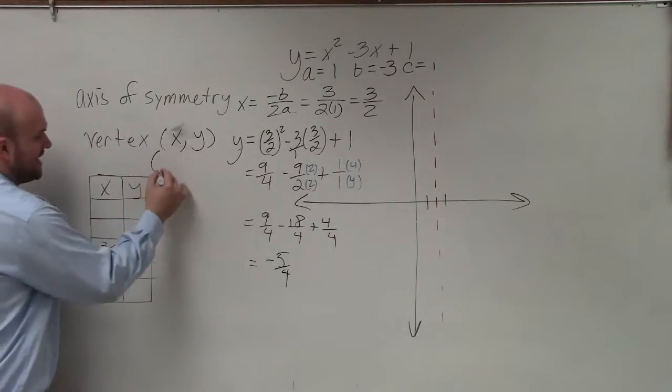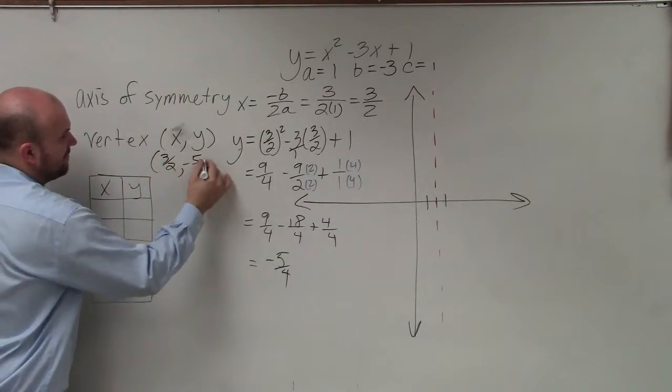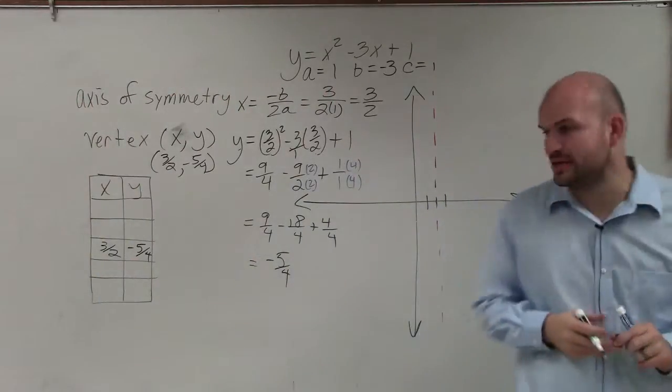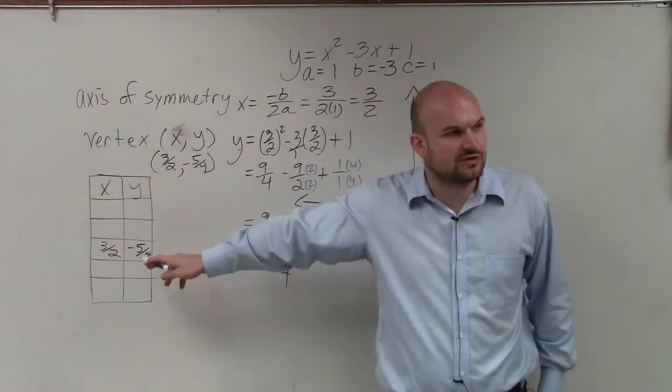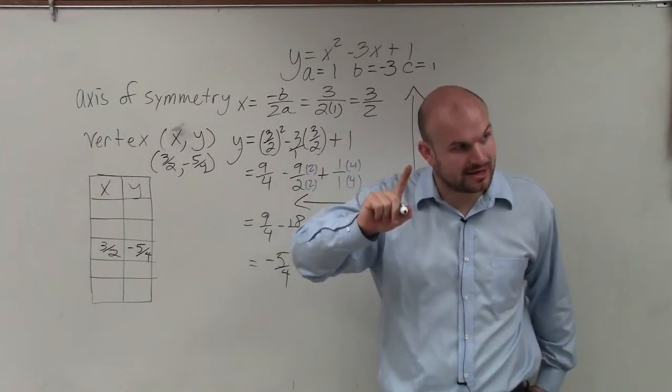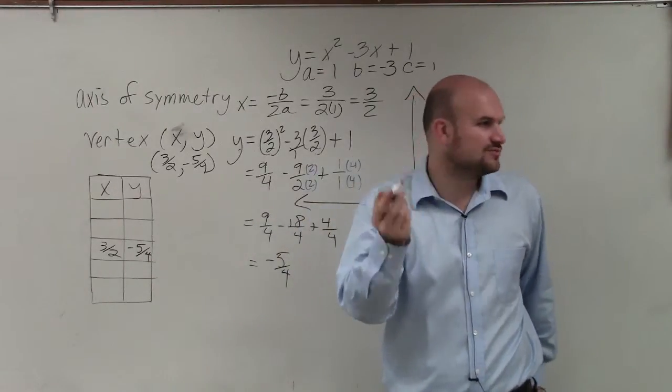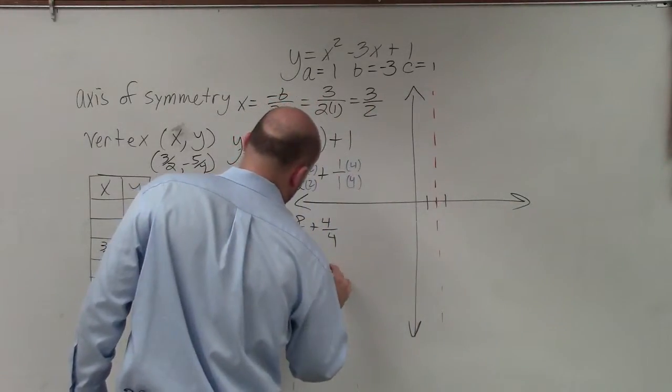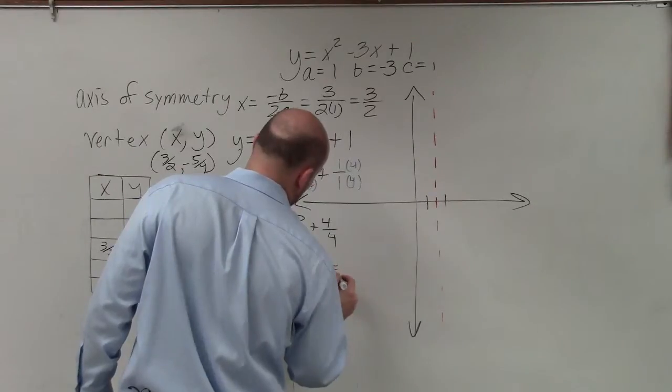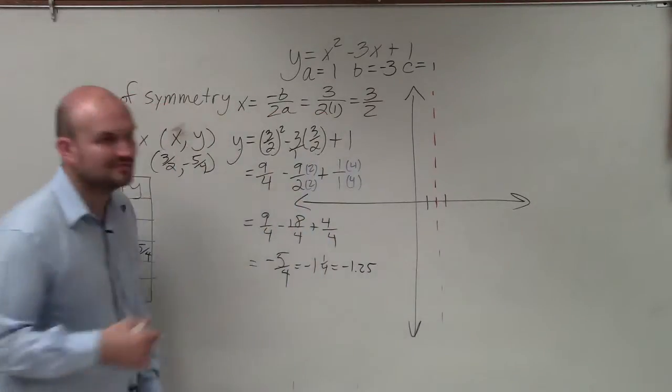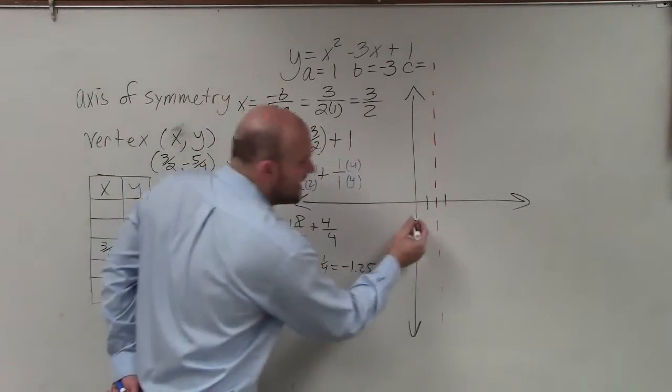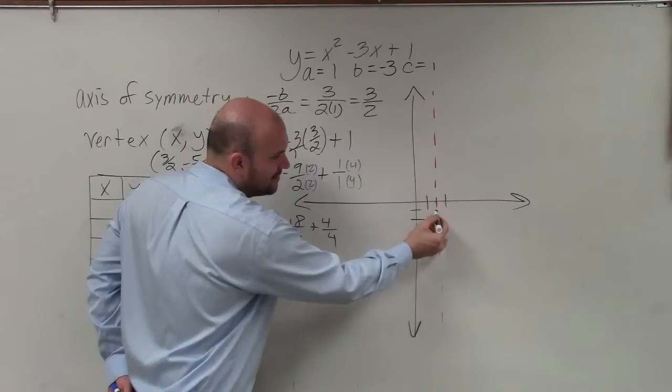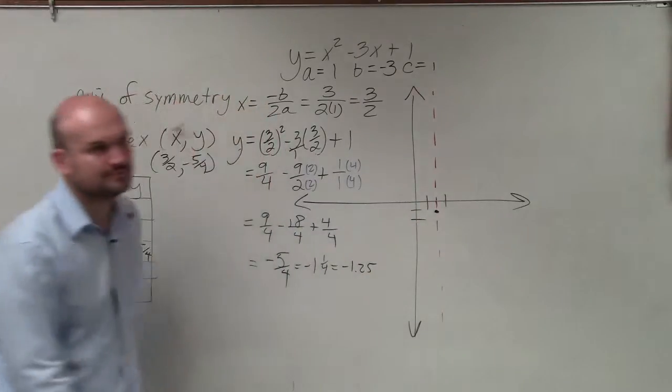So my vertex is 3 halves, comma, negative 5 fourths. And you'll be like, all right, how are we going to graph that? Well, remember, 4 goes into 5 one time, right, with a remainder of 1. So you could rewrite this as negative 1 and 1 fourth. Or if you also had a calculator, it'd be negative 1.25. So that is between 1 and 2. So I go over 3 halves, down negative 1.25. All right?